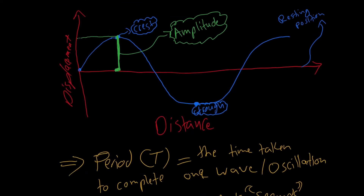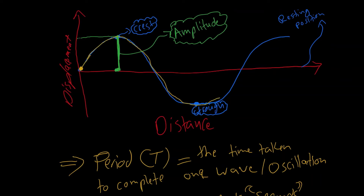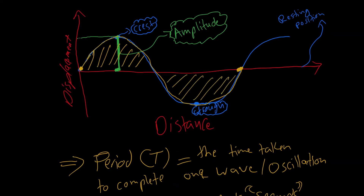Let's see how the period looks on the sketch. Starting from a point on the wave, we trace it going up and then back down, completing a single wave. A useful tip to confirm a complete wave: one complete top plus one complete bottom equals one complete wave. That's how you identify a full wave cycle.